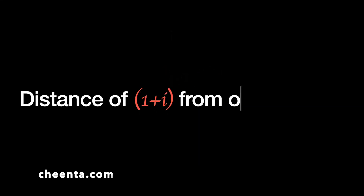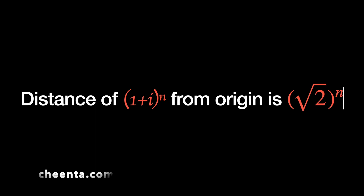You can also find this using a non-geometric method, but geometry is fun. Now, if we raise (1 + i) to the power n, the result is also a complex number, and its distance from the origin is also raised to the power n — this is a very powerful property of complex exponentiation. You need a course on complex numbers for mathematics olympiad to really understand what's going on here.